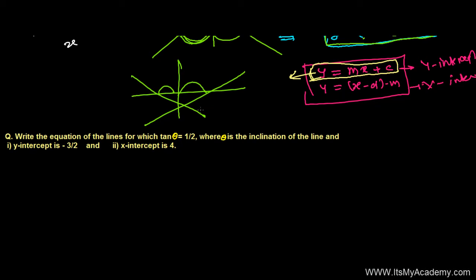Based on the concept, recently we learned slope-intercept form of the equation of a line. Let's try to solve this question — this will help us understand the problems. Write the equation of the lines for which tan theta is 1 by 2, where theta is the inclination of the line.